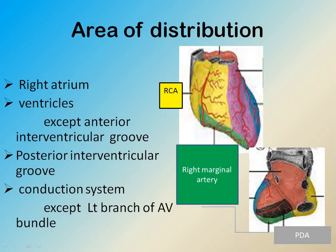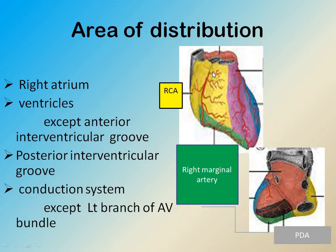Area of distribution: the right coronary artery supplies blood to the right atrium and ventricles, except the anterior interventricular groove, which is supplied by the left coronary artery. It also supplies the posterior interventricular conduction system, except the left branch of the AV bundle.